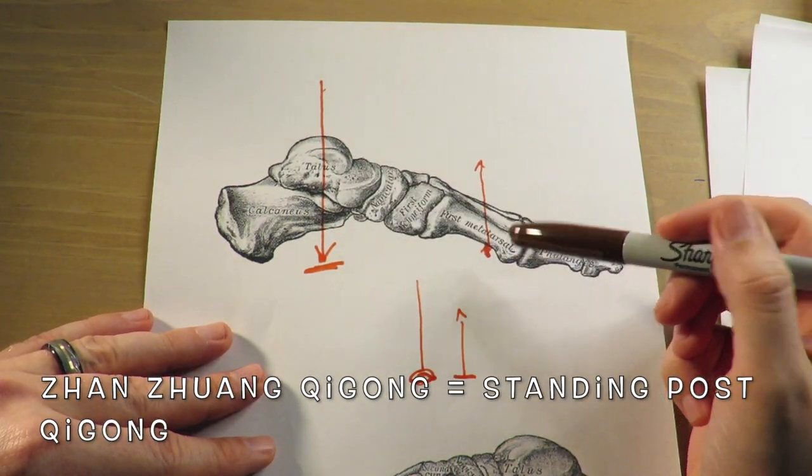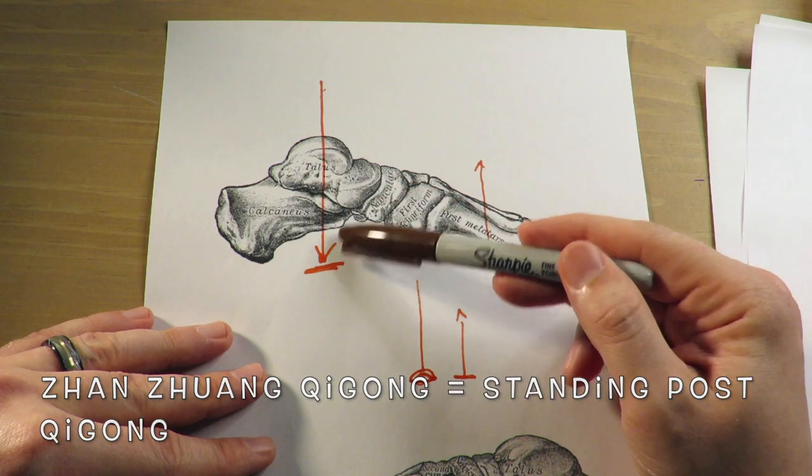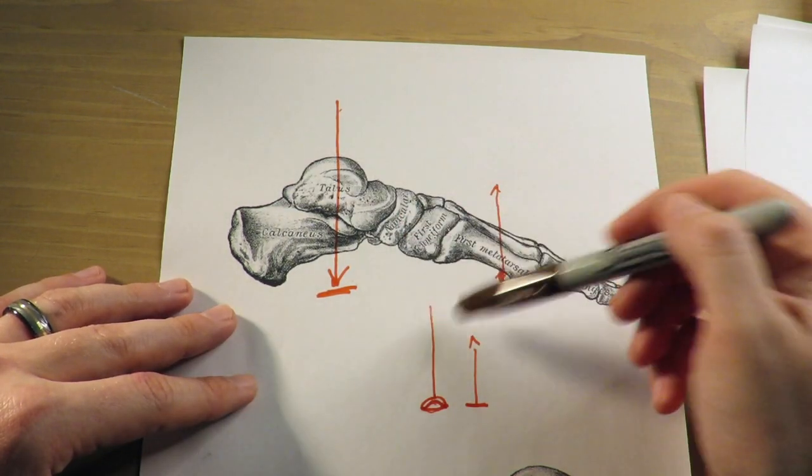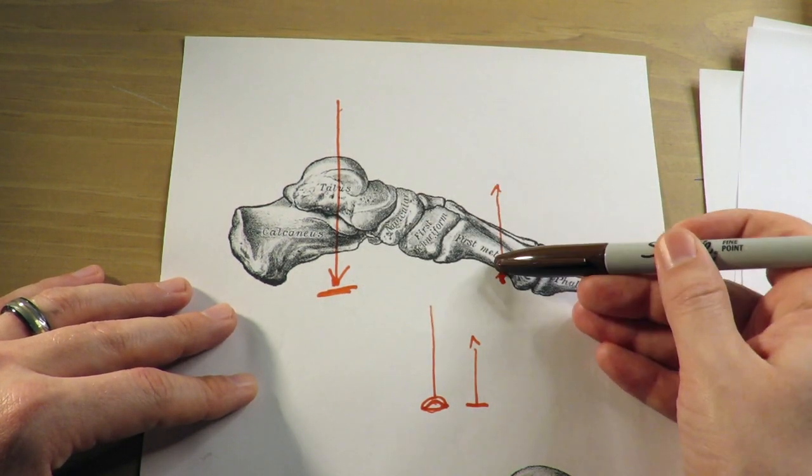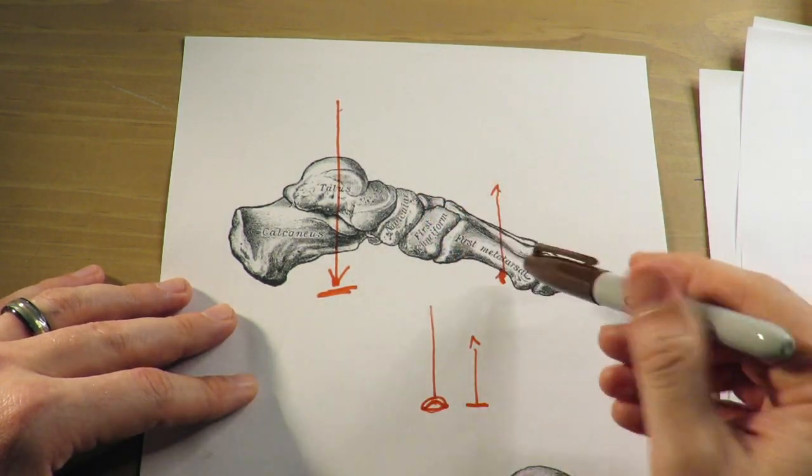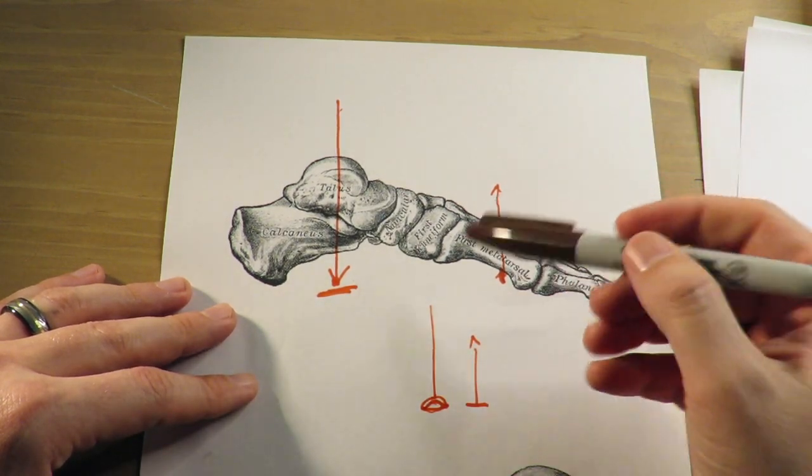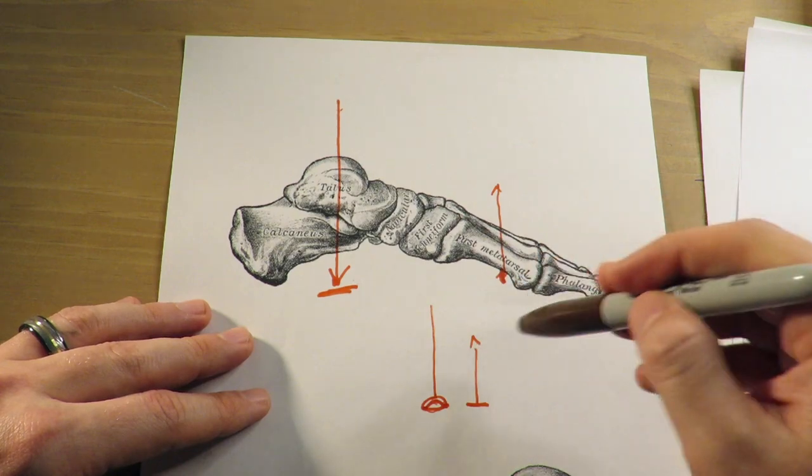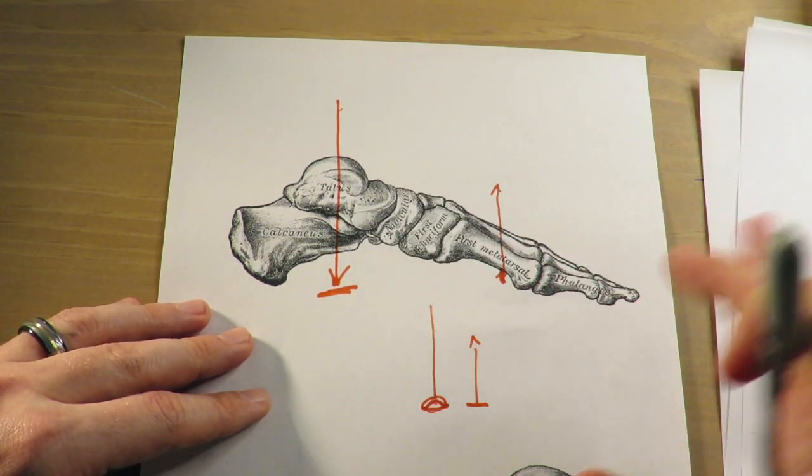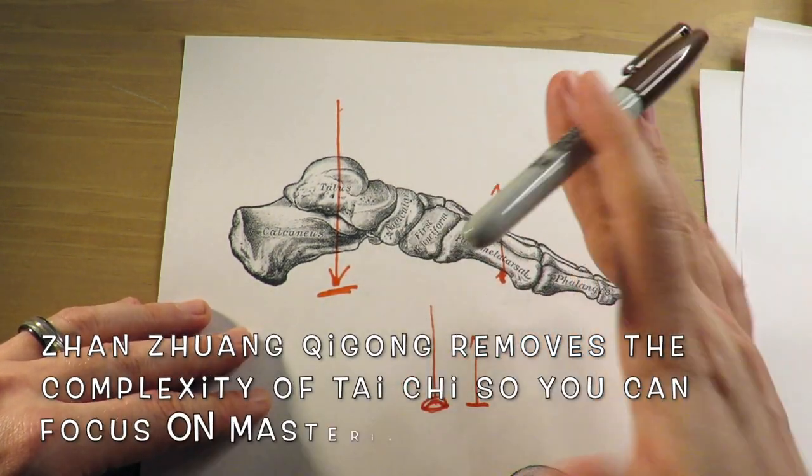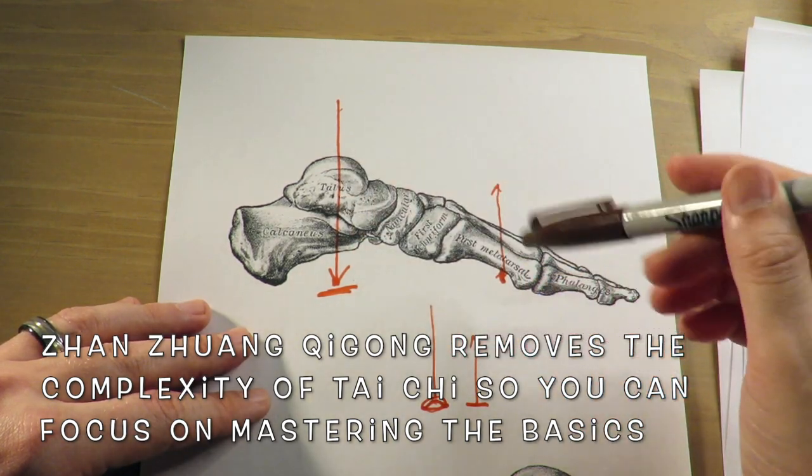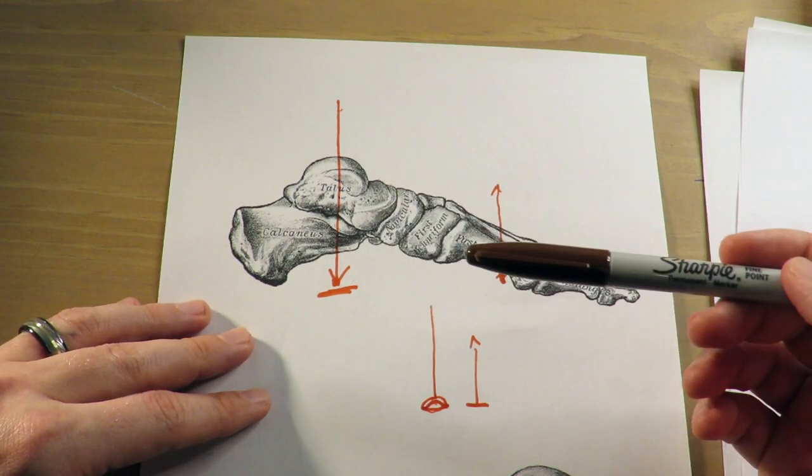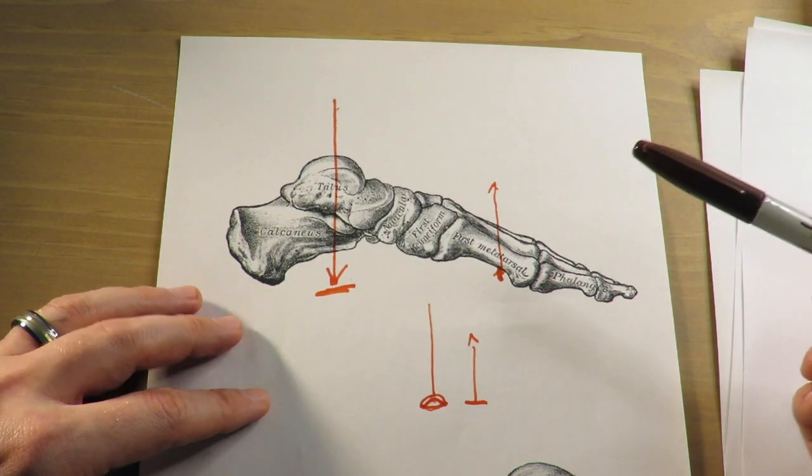Now this is the same weight distribution that you would use while you're doing zhan zhuang qigong or standing post qigong. And if you're not used to this weight distribution where the weight's focused here and you have a drawing up here with that suction cup foot action on the floor, then I would highly recommend that you start practicing this with your zhan zhuang rather than trying to put it into your forms because that's going to be a lot more complicated.